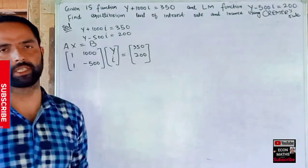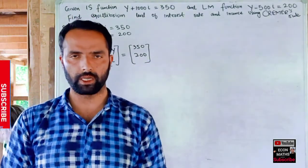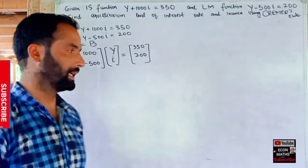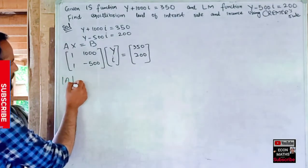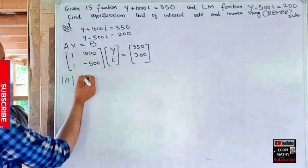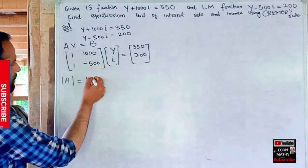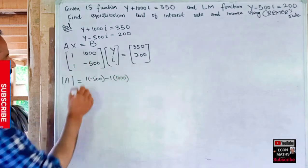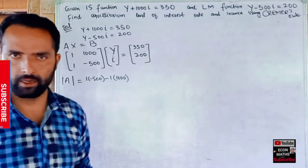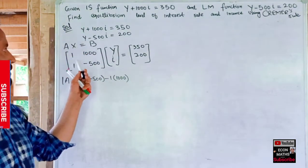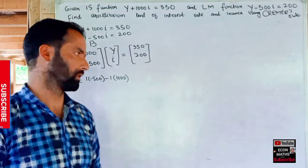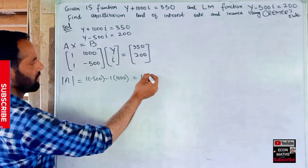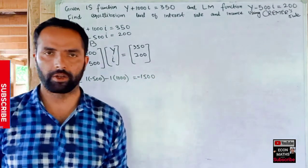This is the first step in solving the system of linear equations using Cramer's rule. After that, we take the determinant of the coefficient matrix. The determinant equals 1×(−500) − 1×1000, which is −500 − 1000 = −1500. This is the determinant of the coefficient matrix.